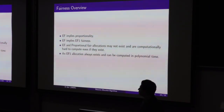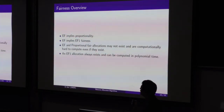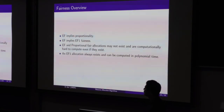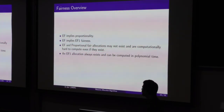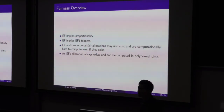To summarize the properties: EF implies both proportionality and EF1. An EF or proportional allocation may not exist and is computationally hard to compute. An EF1 allocation always exists and can be computed in polynomial time.